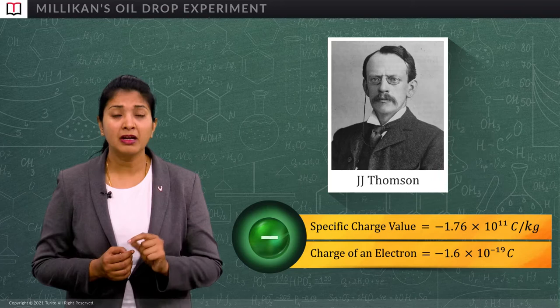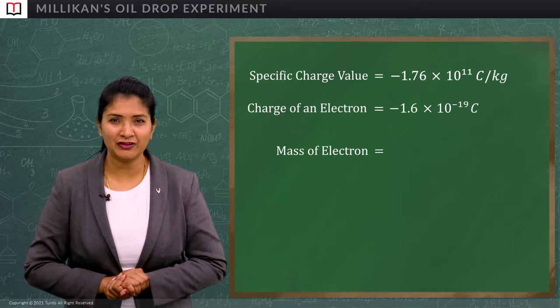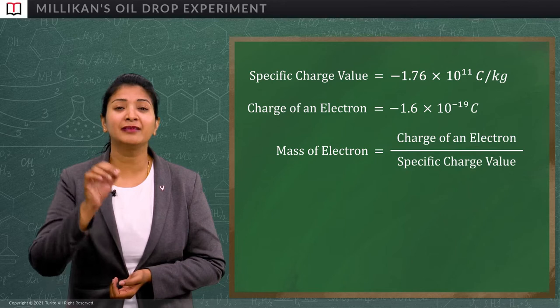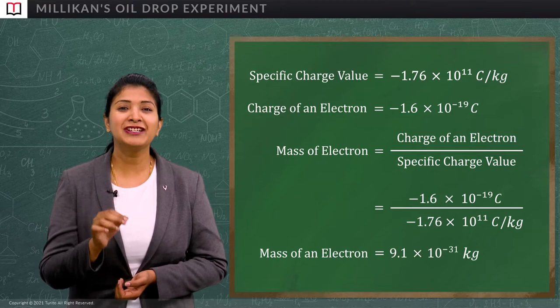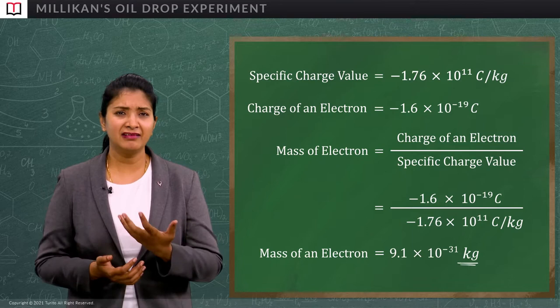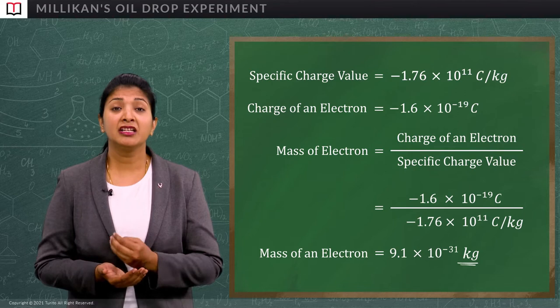So, in order to calculate the mass of electron, we can divide the charge of an electron with its specific charge. And we will get the mass of electron as 9.1 into 10 to the power minus 31 kg. So, by this experiment, not only Millikan and Fletcher were able to determine the charge of an electron, they were also able to find the mass of an electron using the specific charge.